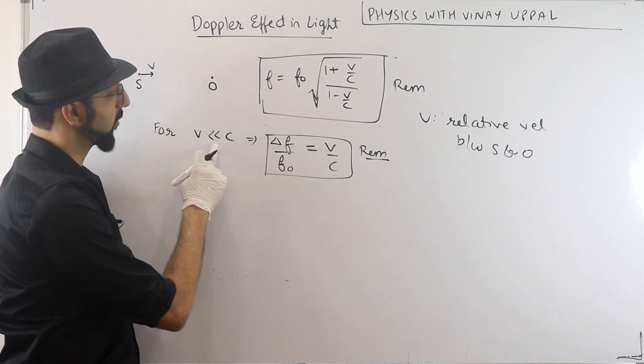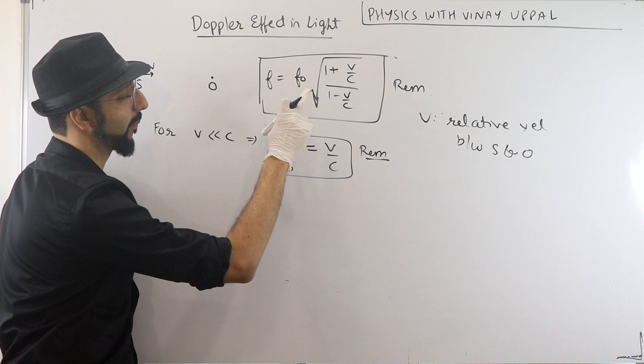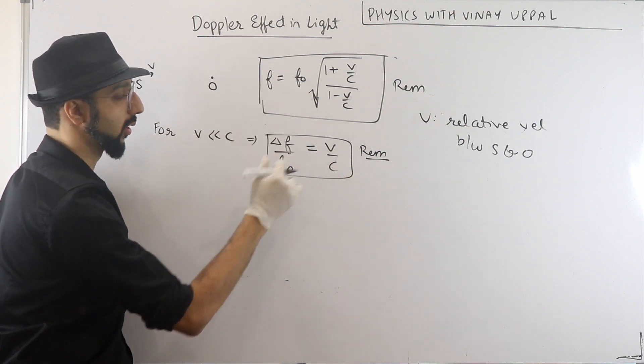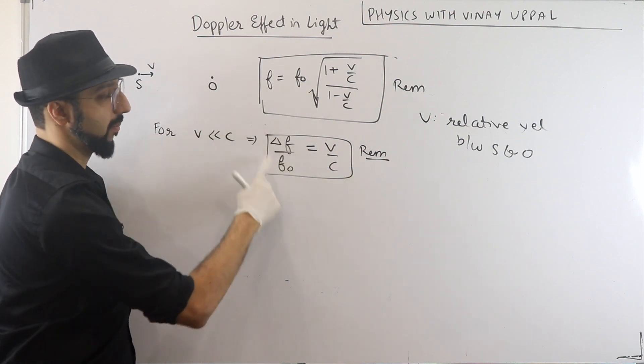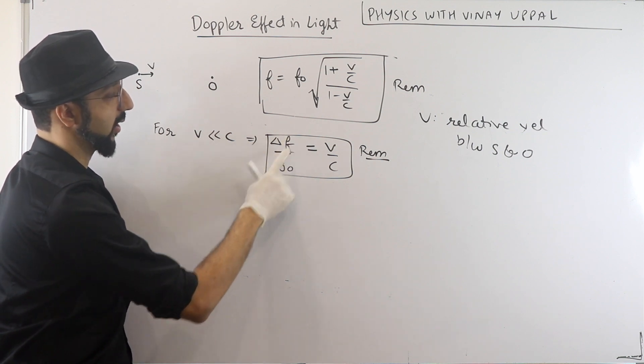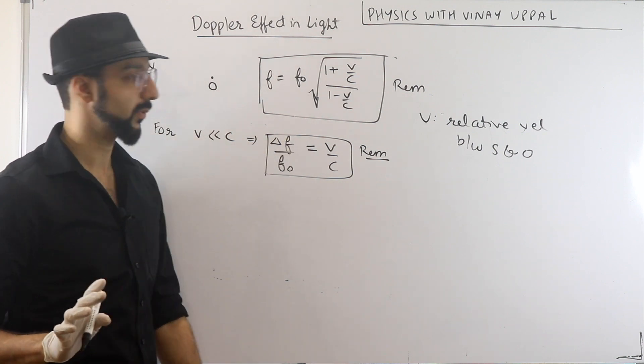And for v much much lesser than c, you can actually do a binomial approximation and come to this. If you have to do it, you can do it yourself. But we will remember this. For v much much lesser than c, delta f by f0 is v by c.